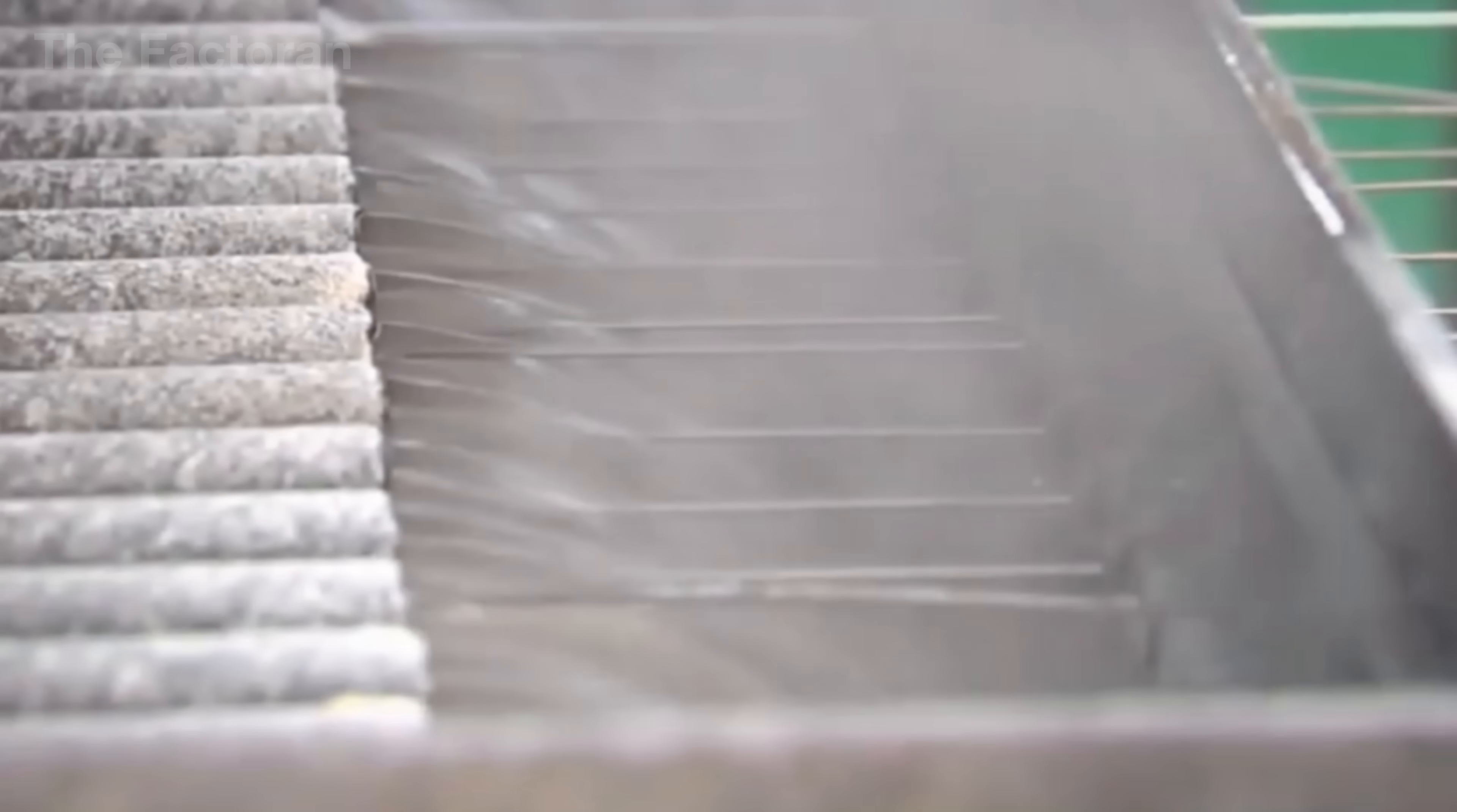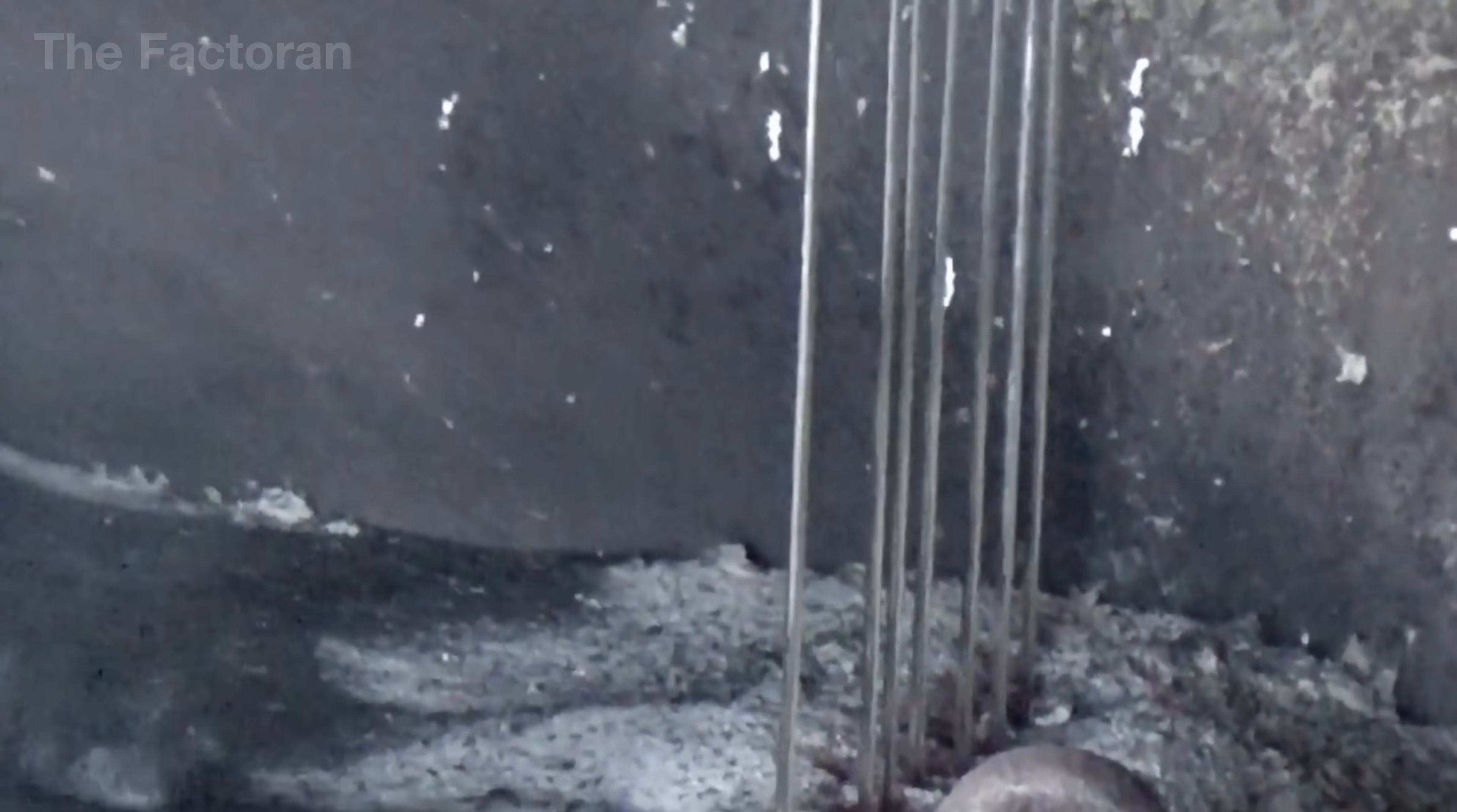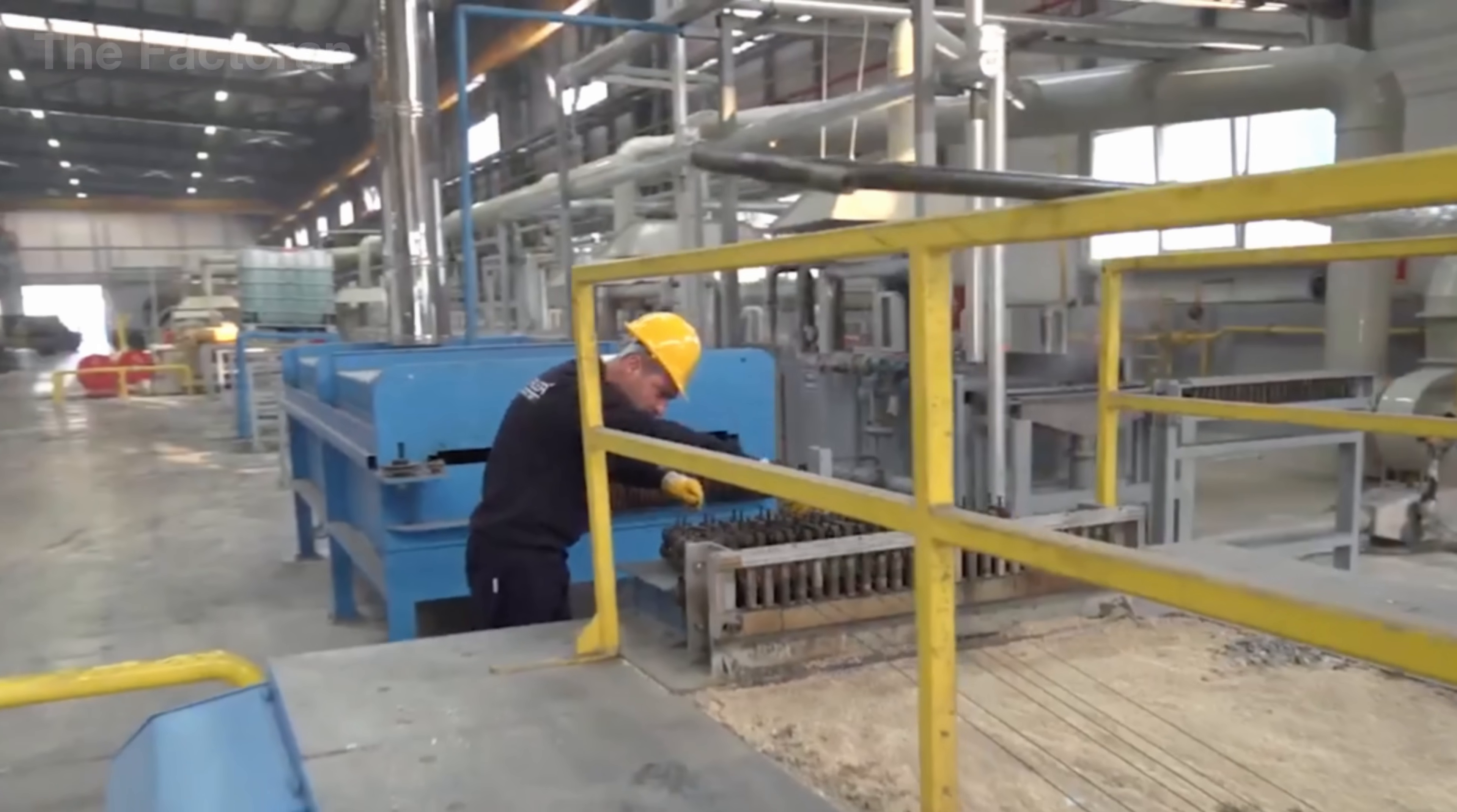As soon as the target temperature is reached, the wire is guided out of the furnace and directly into the quenching zone. There, jets of high-pressure air or baths of specialized industrial liquids such as oil rapidly cool the steel, effectively locking in the newly formed structure.